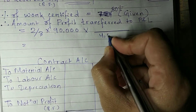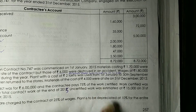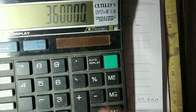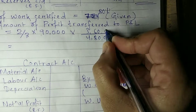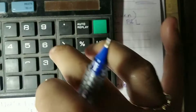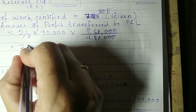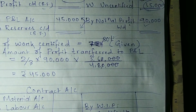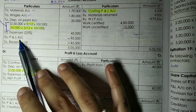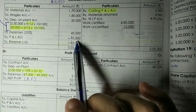So: 90,000 × 2/3 × (3,60,000 / 4,80,000) = 90,000 × 2/3 × 36/48 = Rs. 45,000 transferred to P&L account. The remaining Rs. 45,000 goes to reserves. So both P&L and reserves get Rs. 45,000 each.